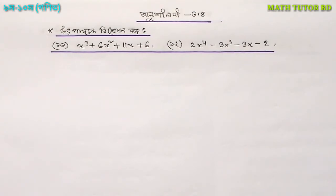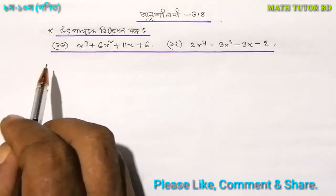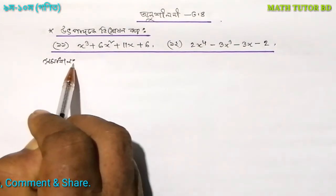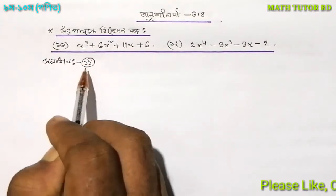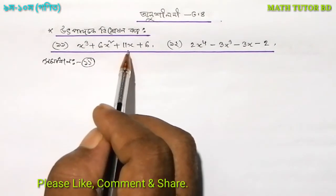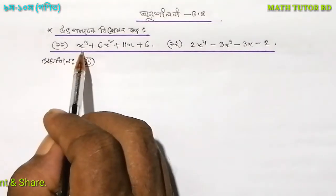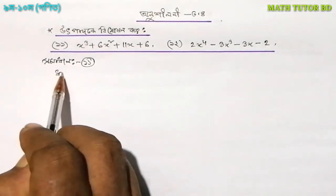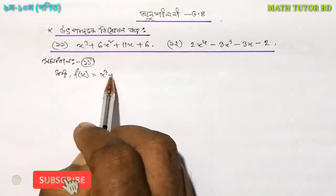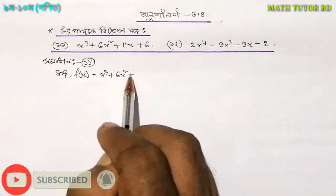I will see you in the description box. The function of x is equal to x³ plus 6x² plus 11x.